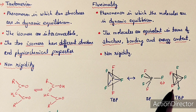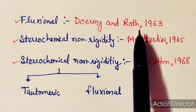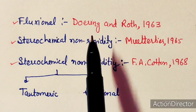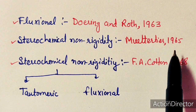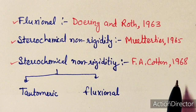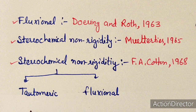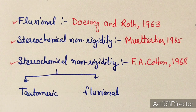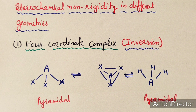The term fluxional was first coined by Doering and Roth in 1963. Stereochemical non-rigidity was coined by Muetterties in 1965, while F.A. Cotton in 1968 gave the term stereochemical non-rigidity to cover both tautomeric and fluxional molecules.